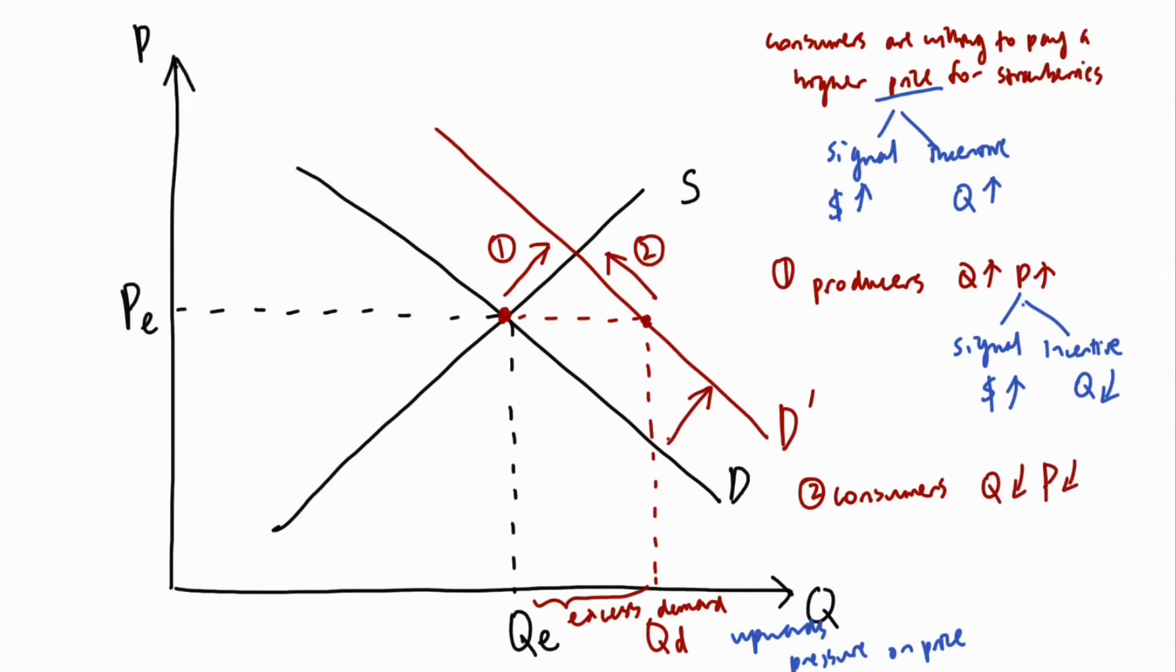With price acting as signals and incentives, the two forces shown on the diagram work together to reallocate the resources in the market and work together to determine a new equilibrium quantity and price, Q star and P star.